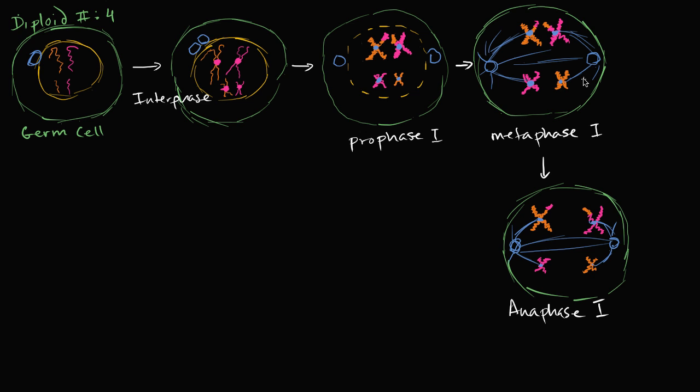And how they split is random. You know, this pink one could have been on the right side, this orange one could have been on the left side, or vice versa. And once again, this adds more variation amongst the gametes, so even all of the resulting gametes that get produced, they all will have different genetic information. So this is anaphase one, you're pulling these apart.